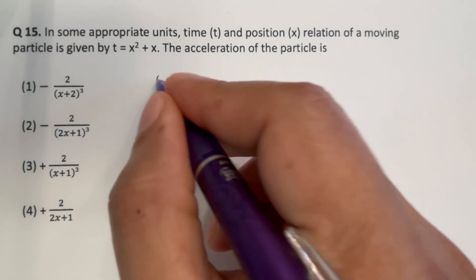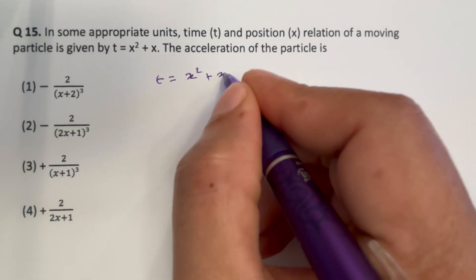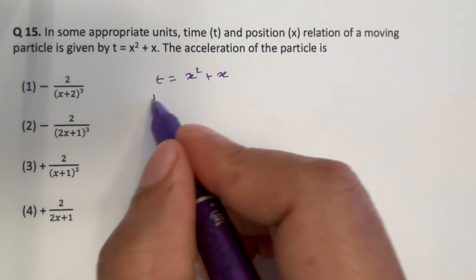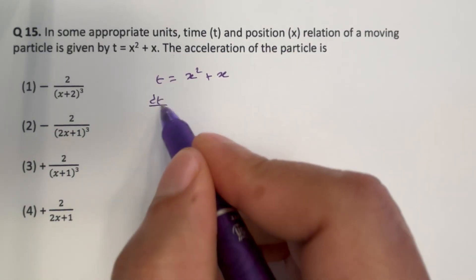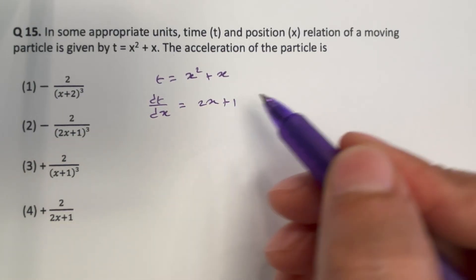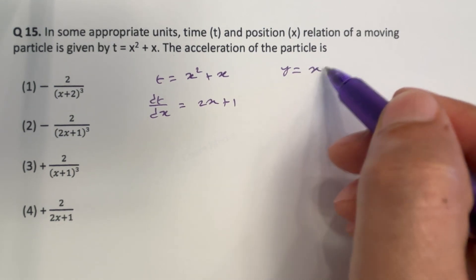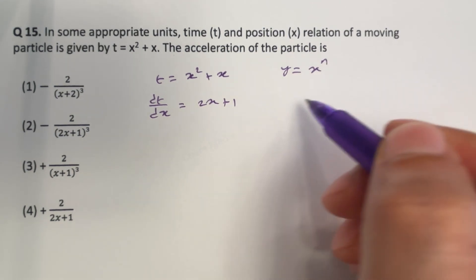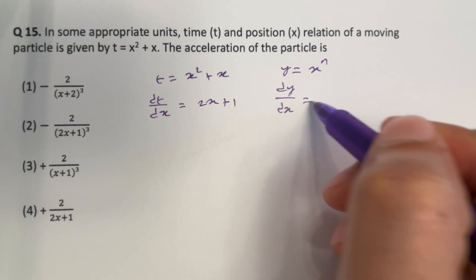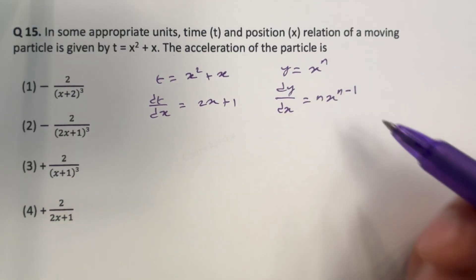We have a function t which is equal to x squared plus x. If we differentiate this function with respect to x, then what we will get is 2x plus 1, because when you have a function y equal to x to the power n, dy by dx will be equal to n times x to the power n minus 1.